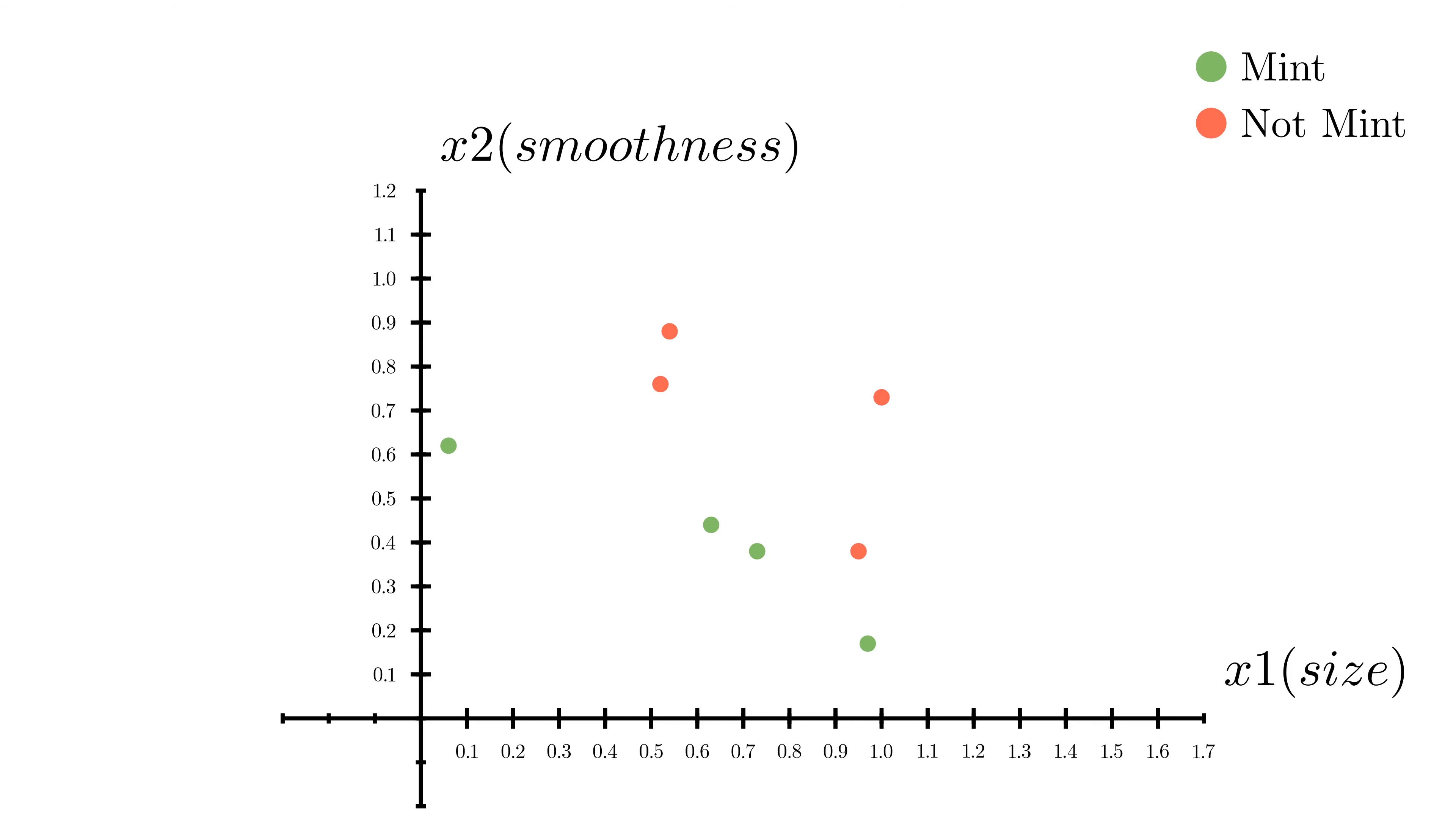There's an obvious separation between mints and non-mints. If we insert a line like this, then we have a model for classifying mints. Anything below the line we say is a mint, anything on or above the line we say is not a mint. Let's formalize that. So our model is a function f that makes a binary prediction about a point. In other words, the input to our model is a two-element vector of coordinates, and the output is a 1 or a 0.